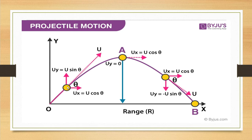When the ball is at the highest point, what is the highest point? At the highest point, the vertical velocity is 0.